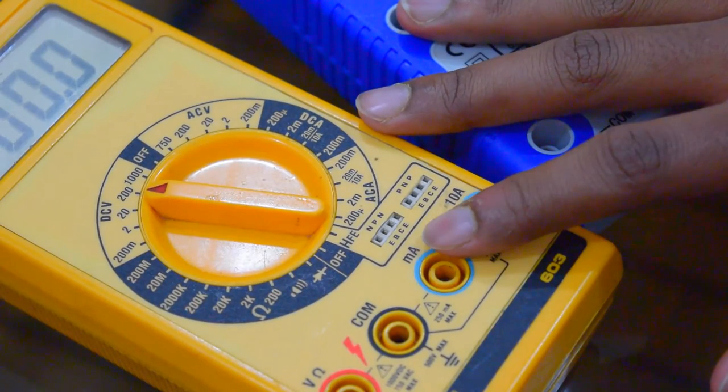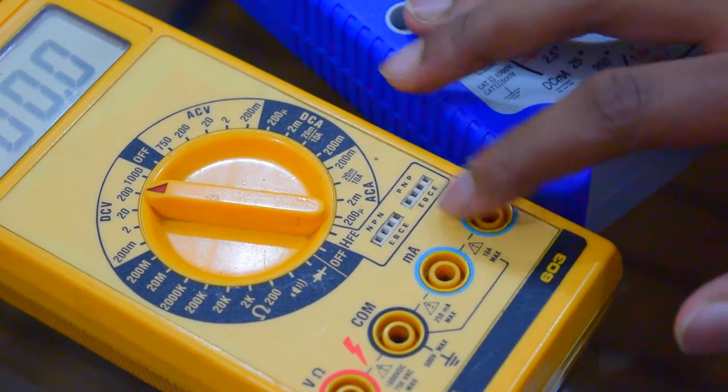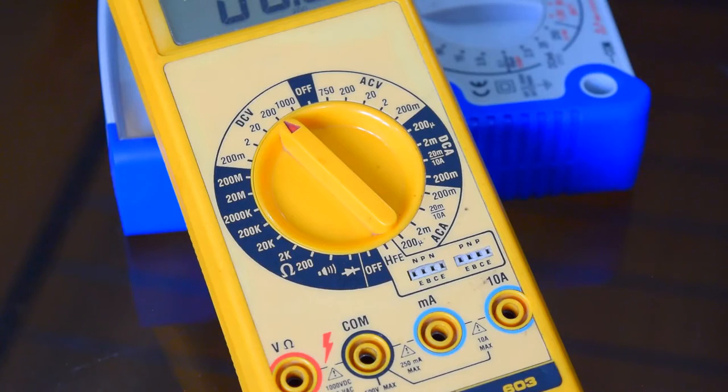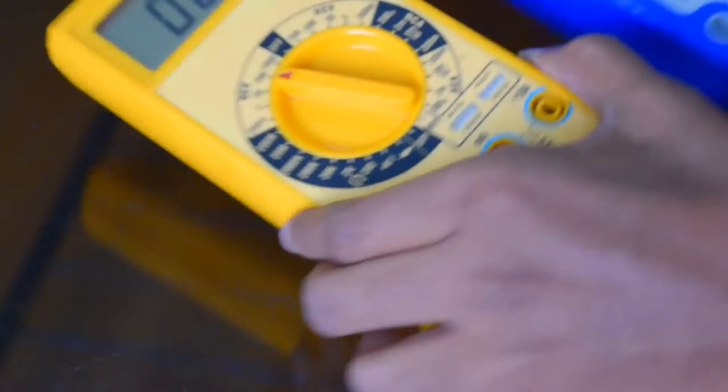In some multimeters, there are some additional features like HFE measurement of a transistor and even frequency measurements. The same functions are also available on this analog meter.